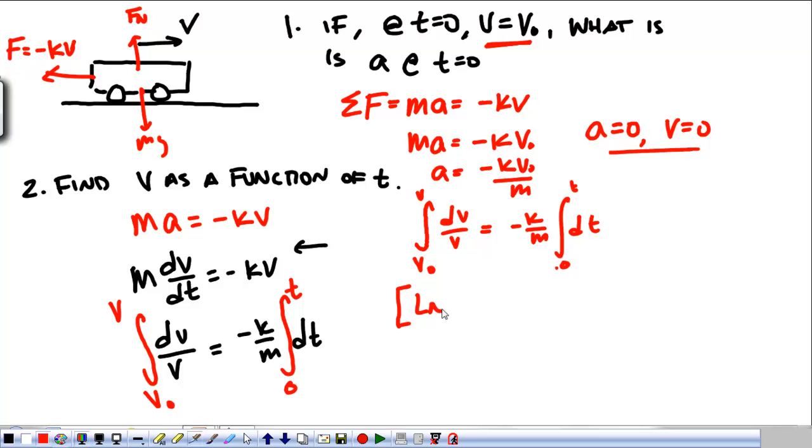This is going to be the natural log of V from V0 to V, and that's equal to negative K times t over M.